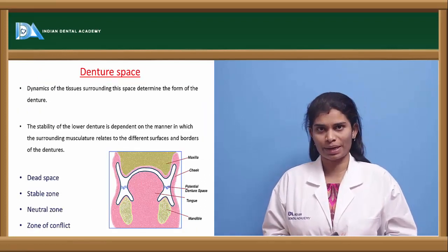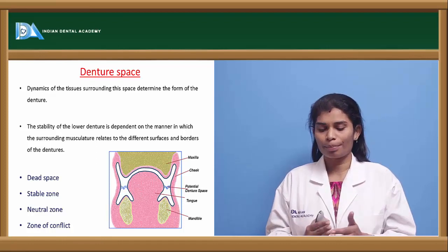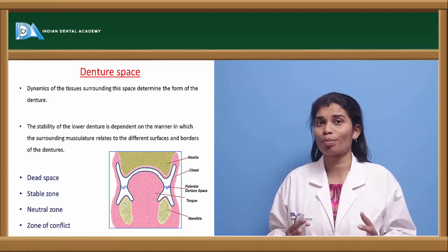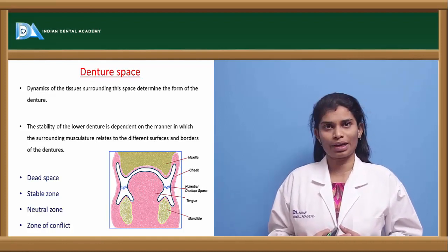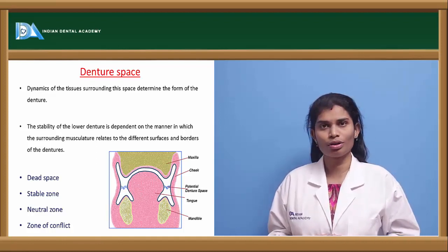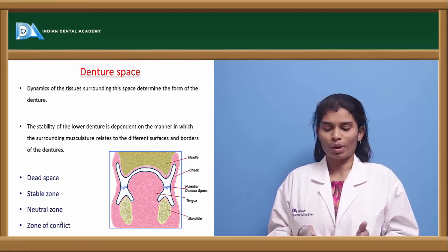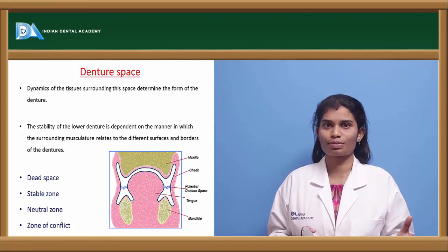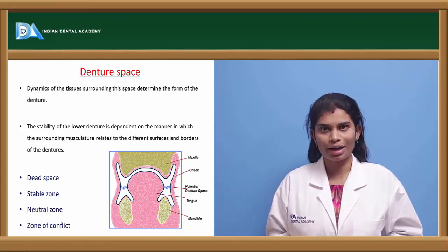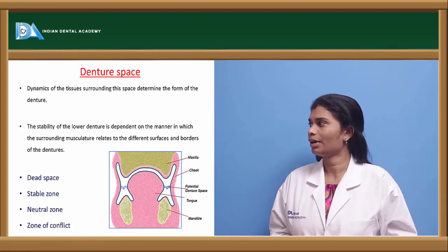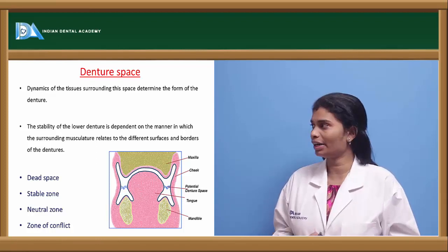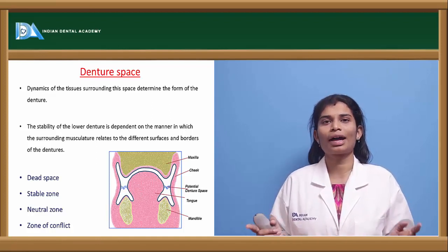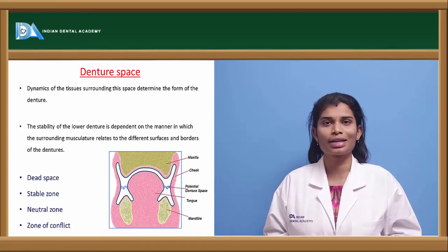The denture space is the space available between the muscular components while keeping them in proper function. Other names for this space are: dead space, stable zone, neutral zone, or zone of conflict — wherein the forces between the tongue side and the outer surface (the buccinator muscle and orbicularis oris) should be balanced. The stability of the denture is thus dependent not just on the anatomic foundation but also on the action of the surrounding muscular components.